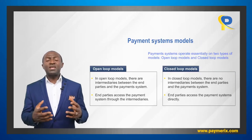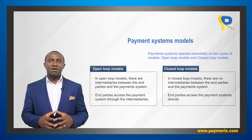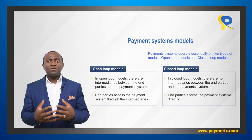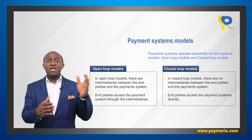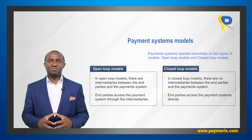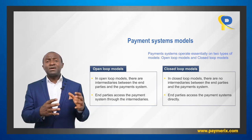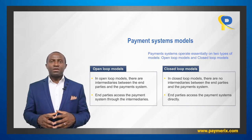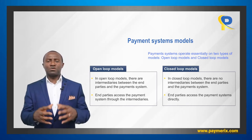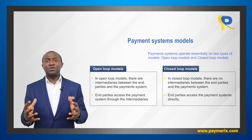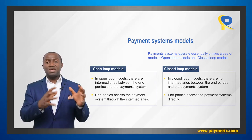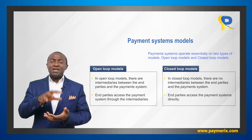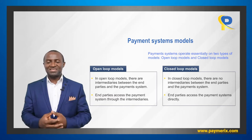Payment systems operate essentially on two types of models: open-loop models and closed-loop models. In open-loop models, there are intermediaries between the end parties and the payment system, so the end parties access the payment system through the intermediaries. In closed-loop models, the end parties access the payment system directly.